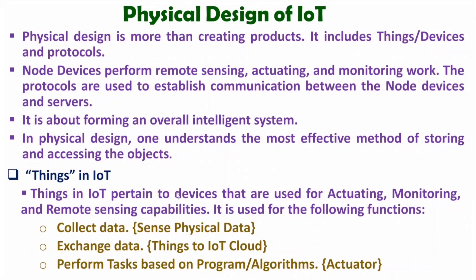Things in IoT pertain to devices that are used for actuation, monitoring and remote sensing capabilities, and are used for the following functions. Those functions are like collection of data — data will be sensed as per physical data. Exchange of data as well, where things will be exchanging data with the IoT cloud. As well as it will be performing some tasks with the use of an actuator, and that task is performed based on programs and algorithms. That is how the things part is there with an IoT system.